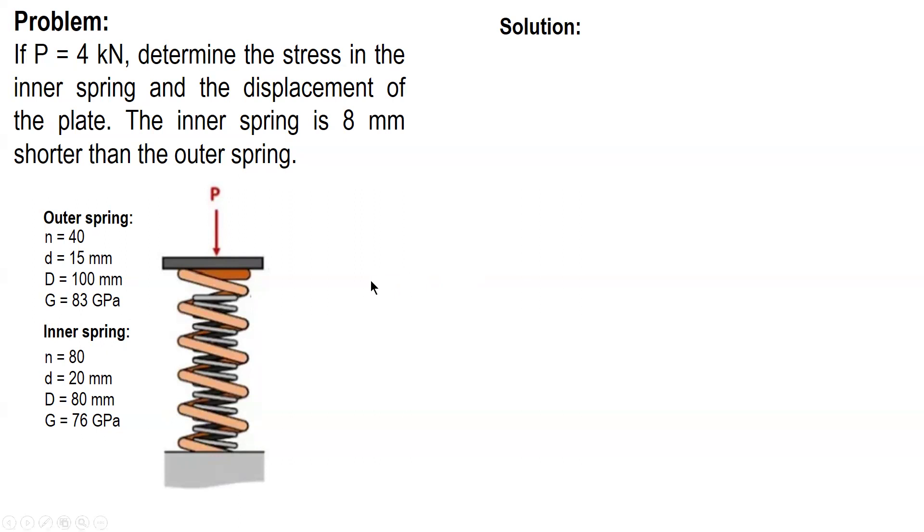Okay, so we have this P equal to 4 kN and this force will be resisted by both the outer spring, P sub O, and the inner spring, P sub I. So, using equilibrium conditions, summation of force vertical, we have P sub I plus P sub O equal to 4 kN, or P I plus P O minus 4,000. To be consistent with G in gigapascal converted to megapascal.